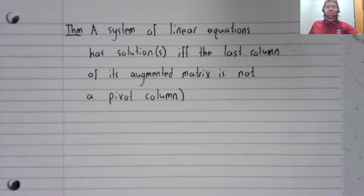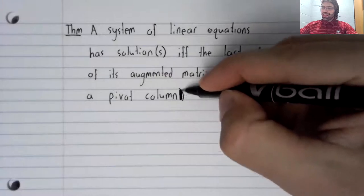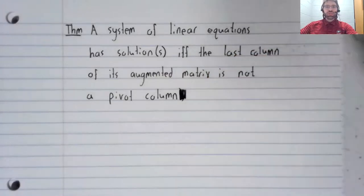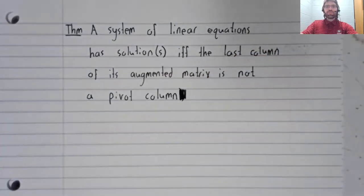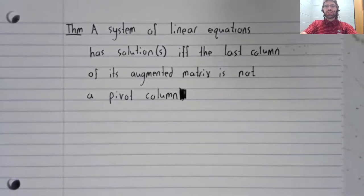Theorem: A system of linear equations is consistent, that is to say, has at least one solution, if and only if the last column of its augmented matrix is not a pivot column.